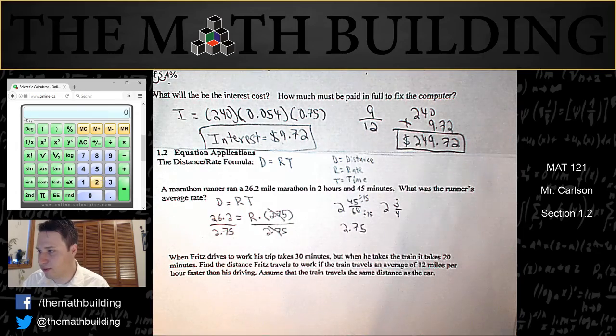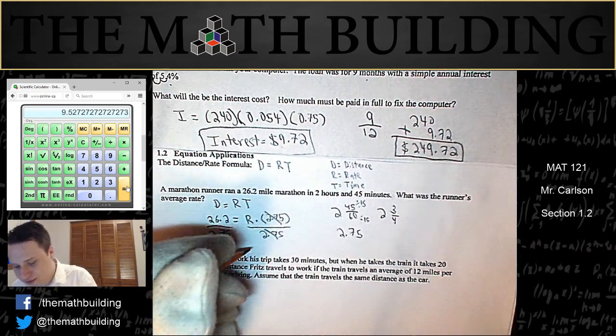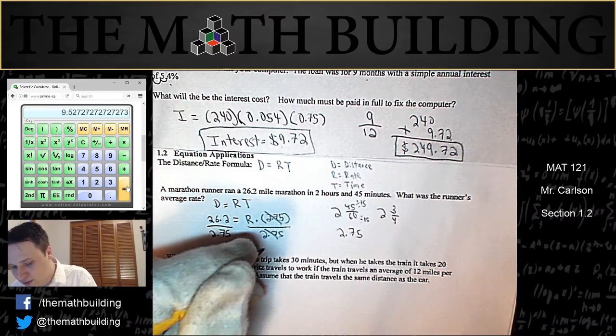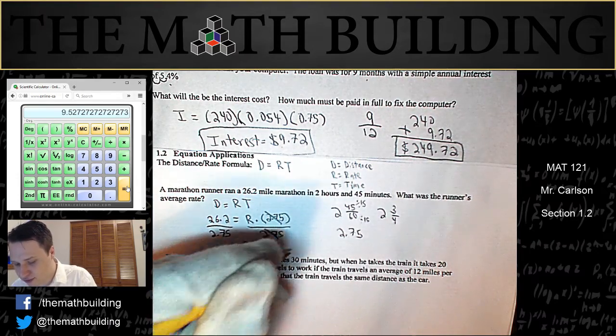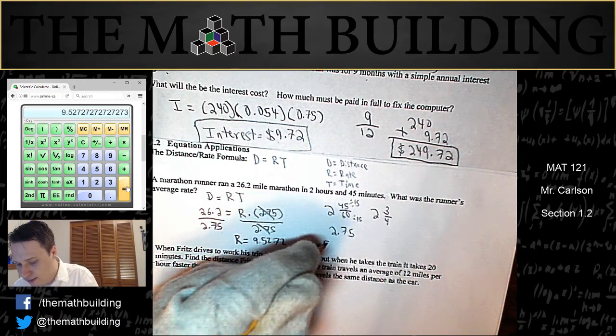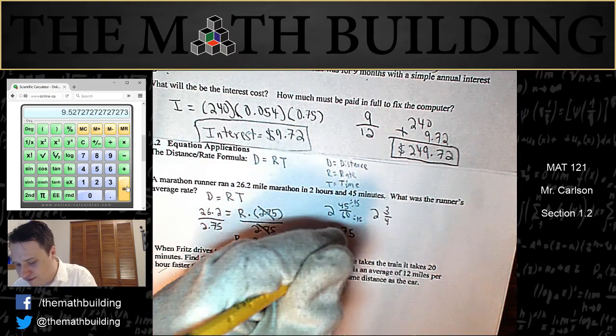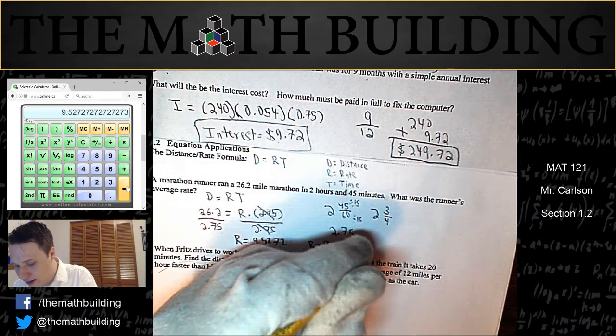So 26.2 divided by 2.75 equals, I'll round that to 9.53. So r is equal to 9.527272. And so we'll round that to 9.53.